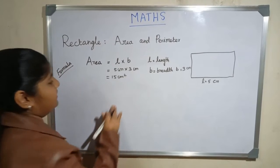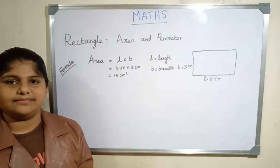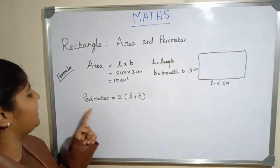The answer is 15 centimeter square. Next we will see the perimeter of a rectangle.